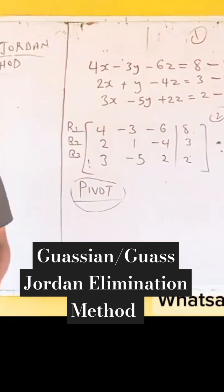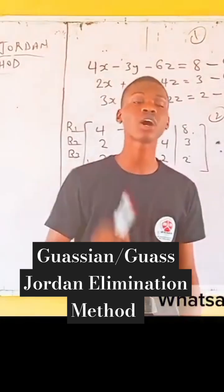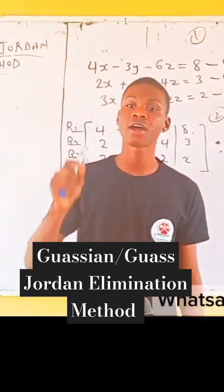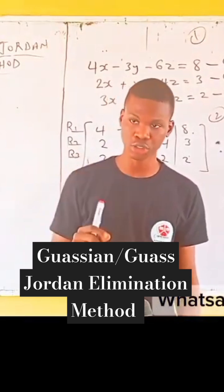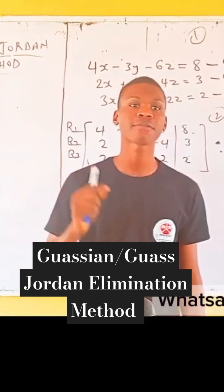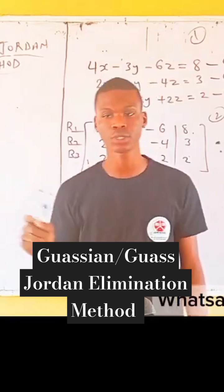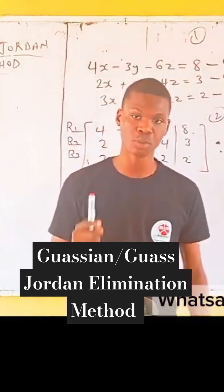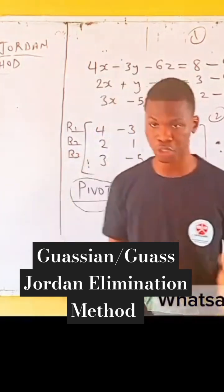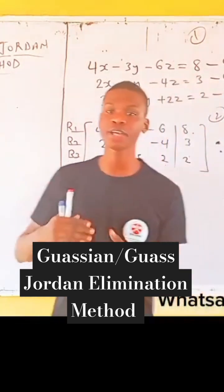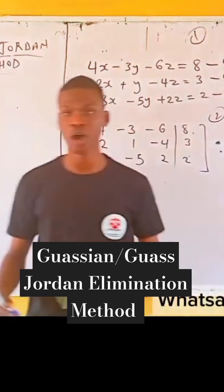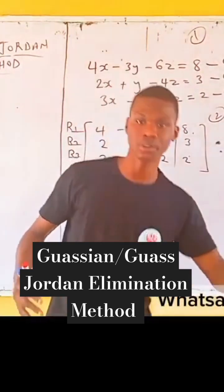A pivot is the non-zero leading entry in a row after row reduction has been done. Before you can identify a pivot, row reduction must have been done. And by row reduction, we are referring to either Gaussian elimination method or Gauss-Jordan elimination method.